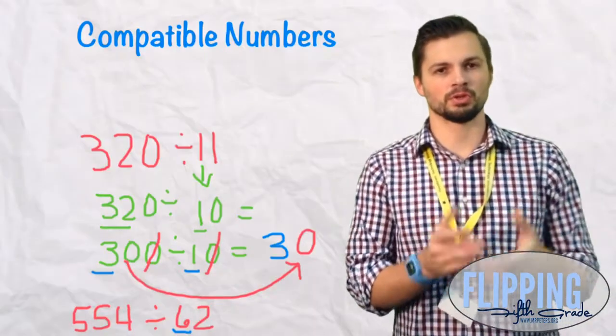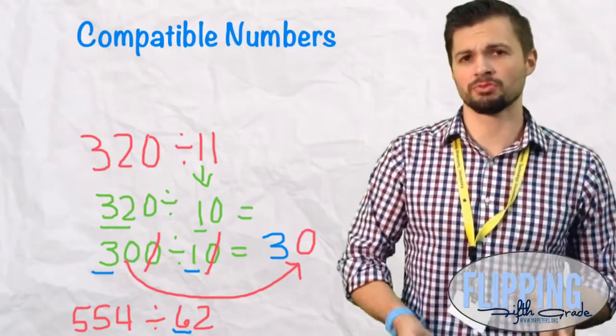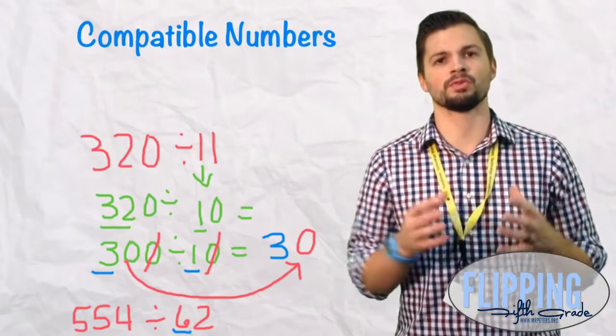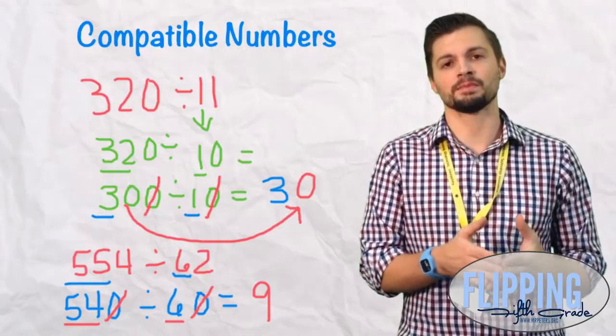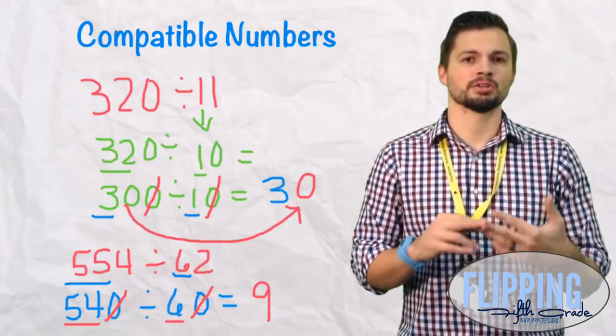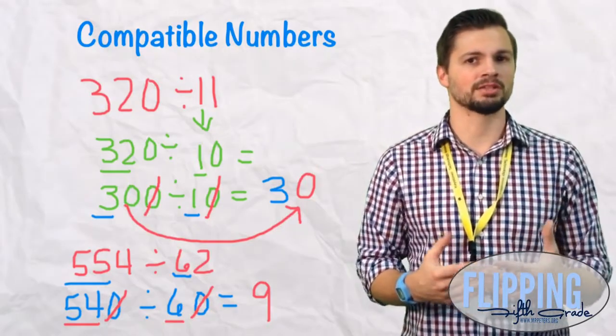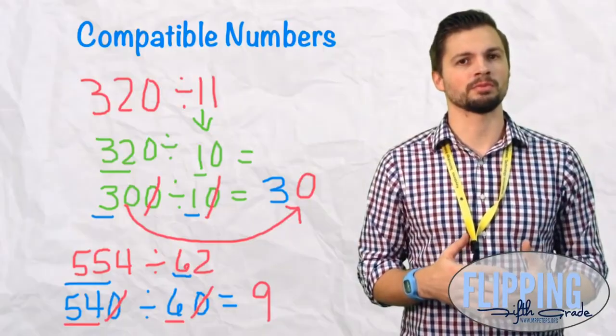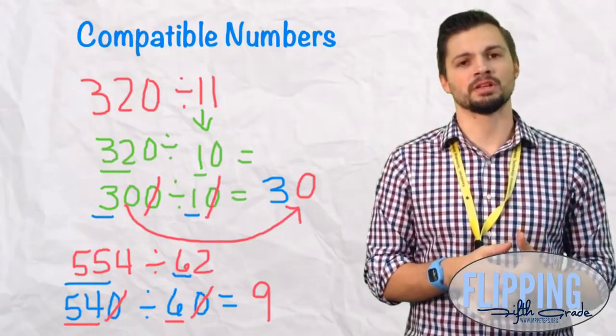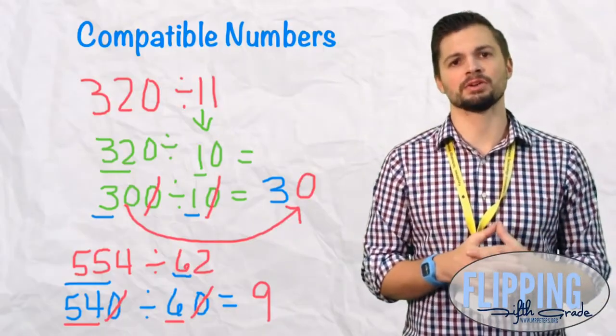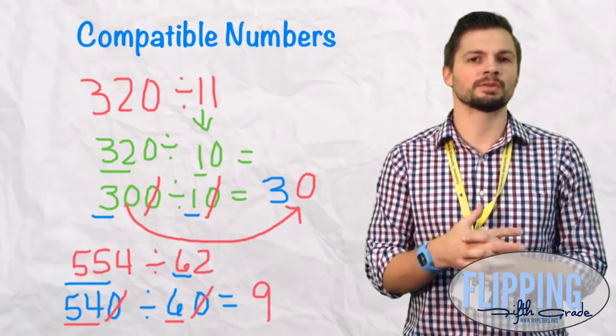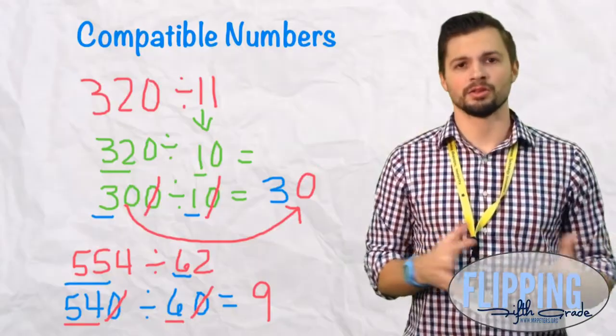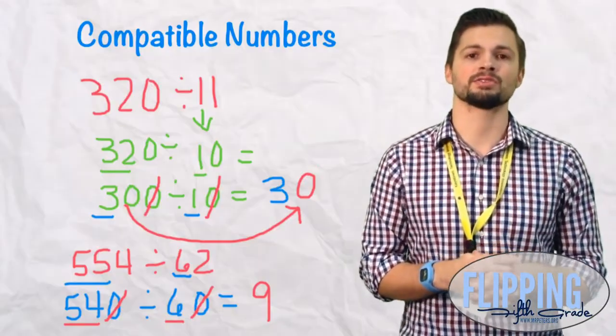So what we're doing here is we're looking for compatible numbers. We're not just rounding. We're looking for numbers that work nicely together to make it easier on you. And like I said last time, we use this process to give us an approximate answer. So when we do the actual problem, for instance, the last one we did, we should get a number somewhere near 9. If you have a number like 16 or 18, you know you did something wrong. If you have a number like 7 or 8, you did something correct and your answer is reasonable.